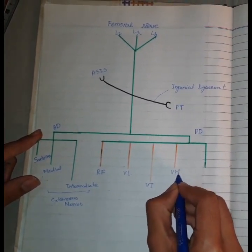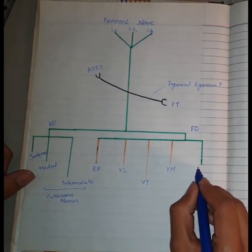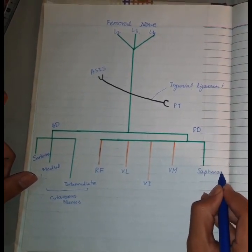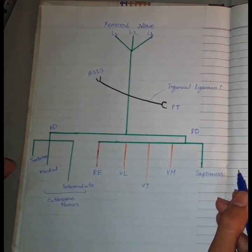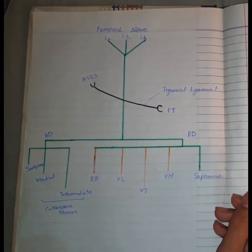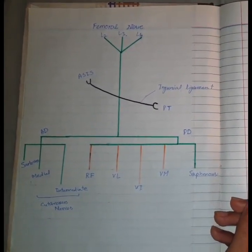The hip joint is supplied by the nerve to rectus femoris. One cutaneous branch is the saphenous nerve. So these are its muscular and cutaneous branches. It is the chief nerve of the anterior compartment of the thigh.